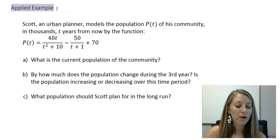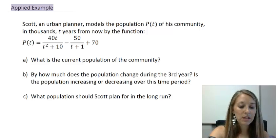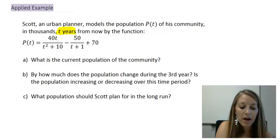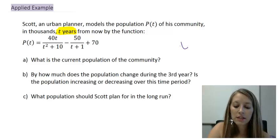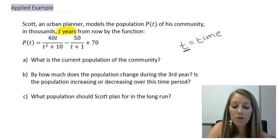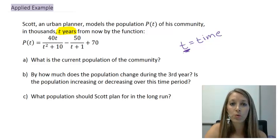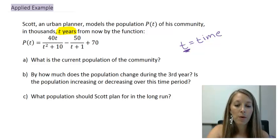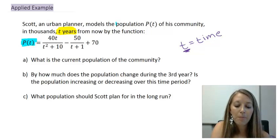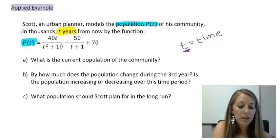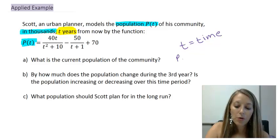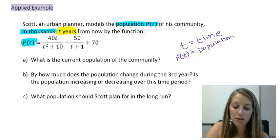Before I focus on parts A, B, and C individually, let's look at what the variables stand for. Looking at T, the problem says 'T years from now,' so T represents time — and any time you see T as a variable, it almost always represents time. P(T) is what this whole function stands for; the problem states that population is P(T), and importantly, this population is in thousands. So keep in mind: P(T) stands for population in thousands.